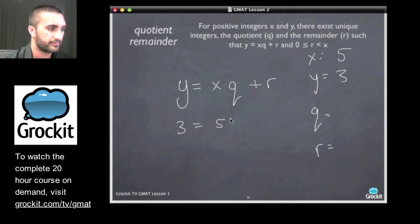If we put in three and five, if q was one, right, we'd get three equals five plus r, and we'd get r equals what? Negative two.